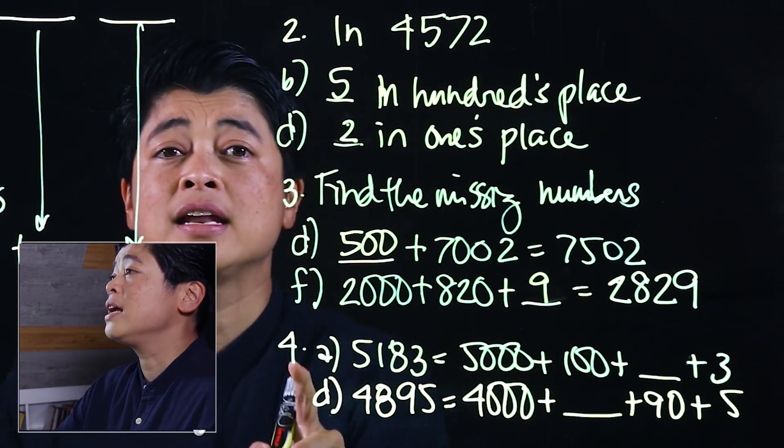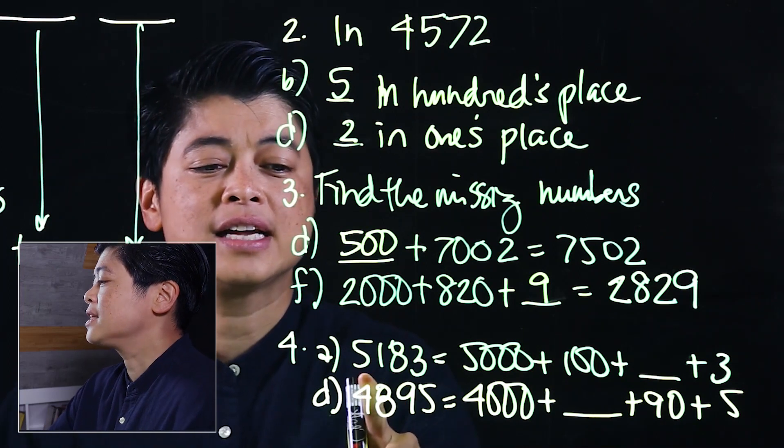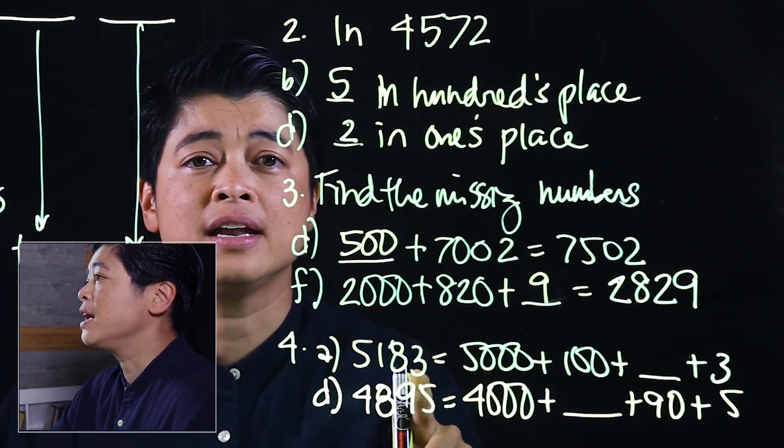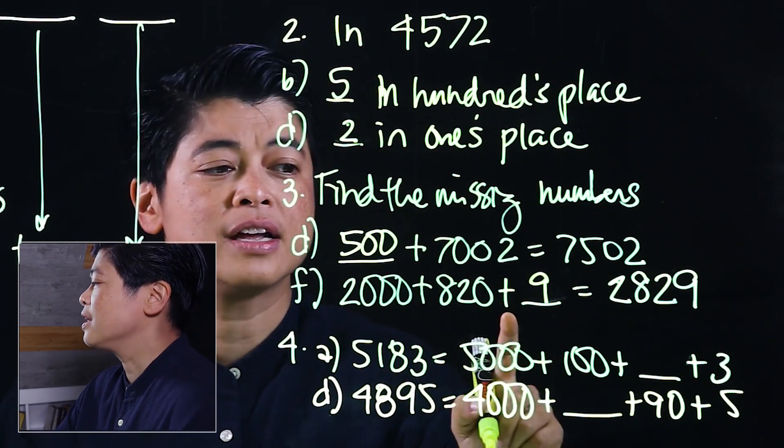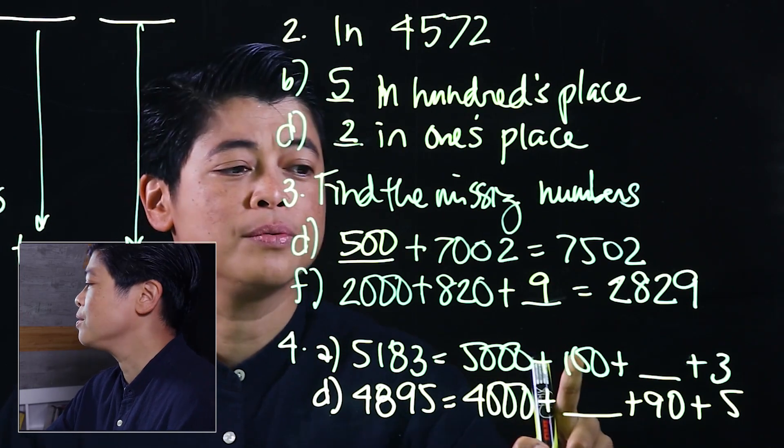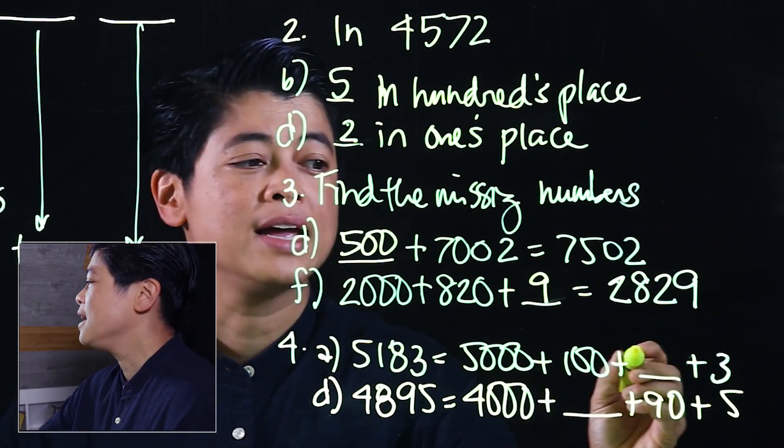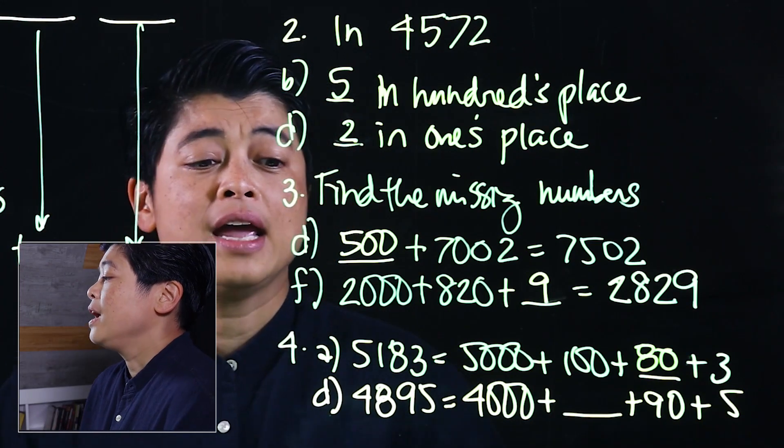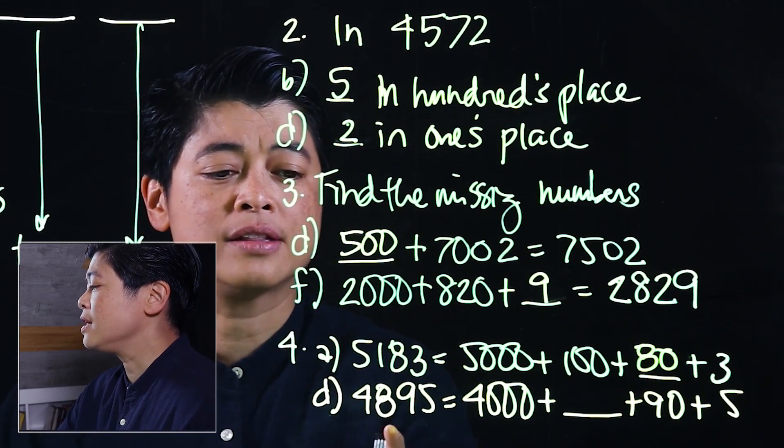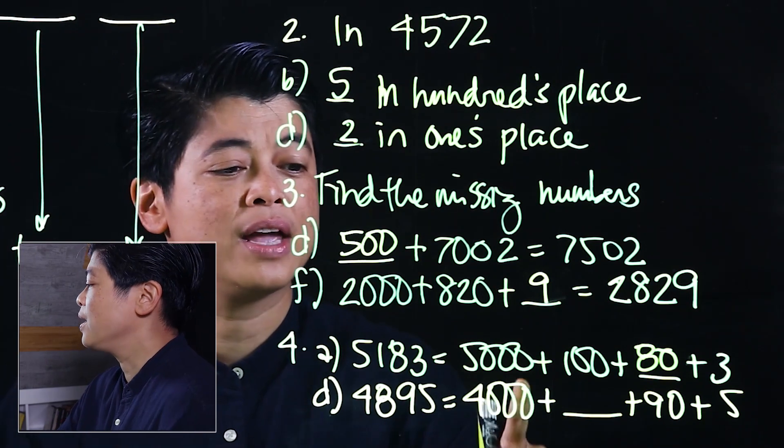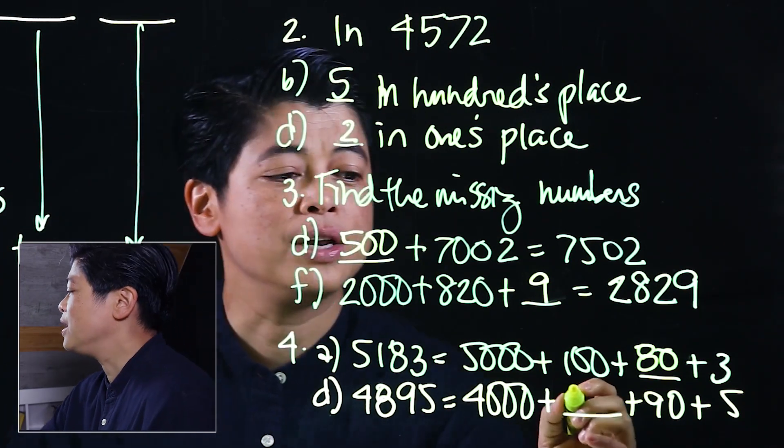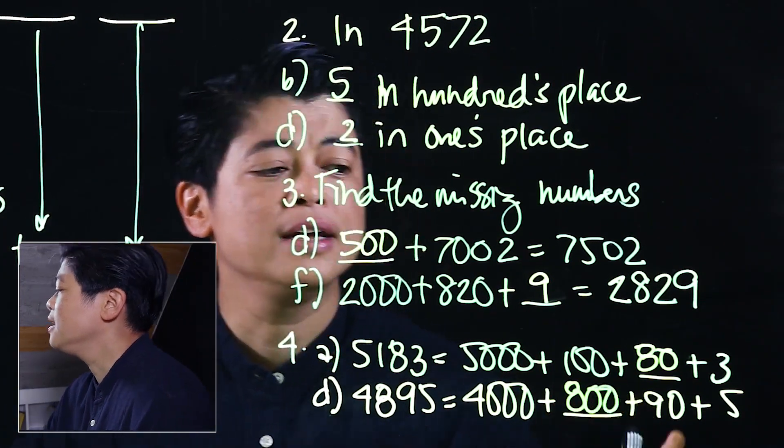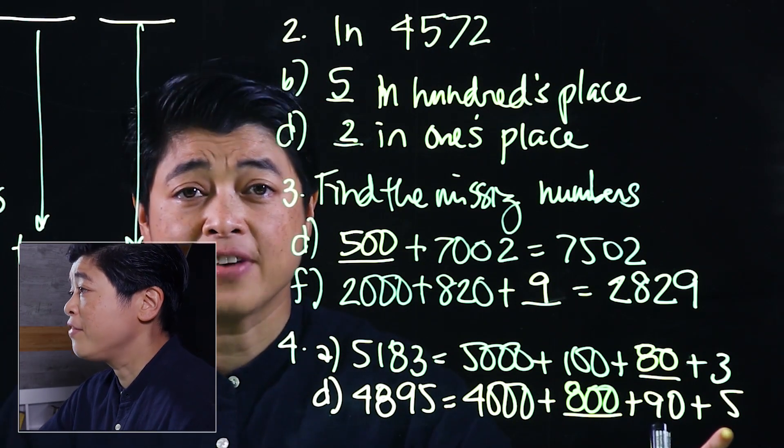In problem number four, it says 5,183. So that's 5,000 plus 100, we're missing the 80, and then the 3 is given. And 4,895, we have the 4,000, we don't have the 800, and then the 90 and then the 5 are given.